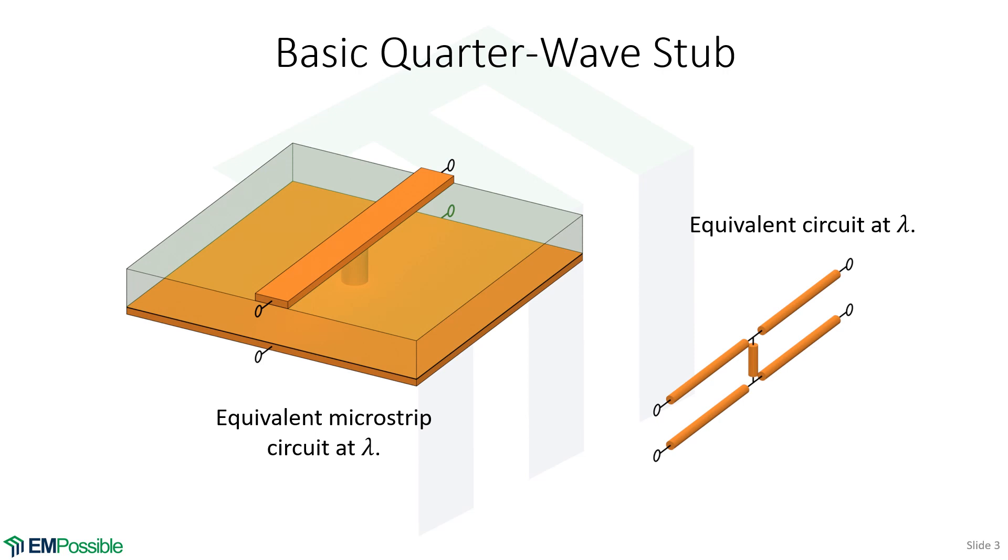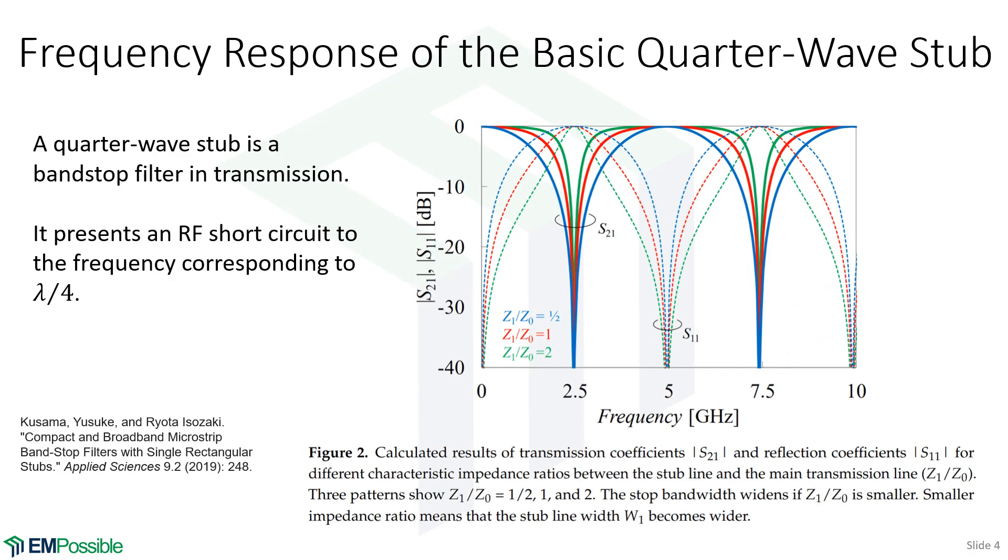Let's go ahead and look at the response of a quarter wave stub. So this is a relatively typical response of a quarter wave stub. Now, if the quarter wave stub reflects very strongly at that wavelength where the stub is a quarter wavelength, we would expect to see a very strong dip in the transmission, and that's our S21 scattering parameter. We see a very strong dip in transmission, and we'll see that for this particular design at 2.5 gigahertz.